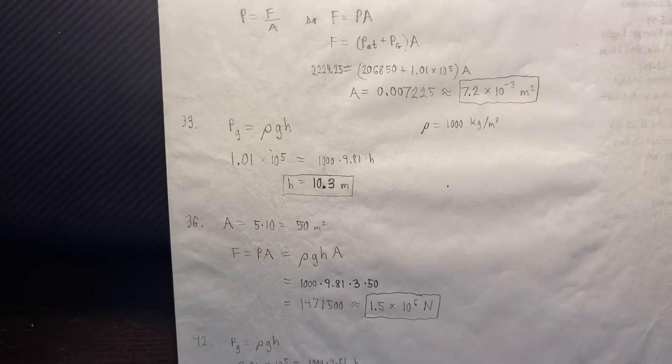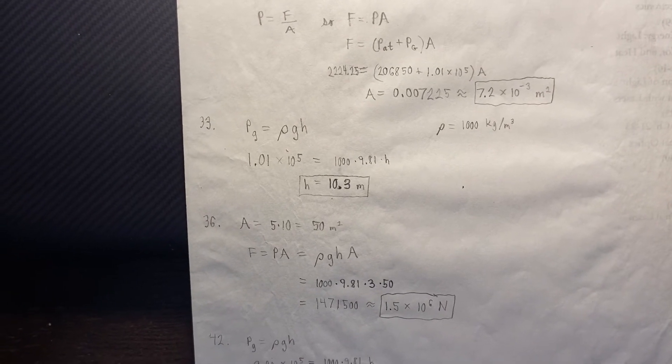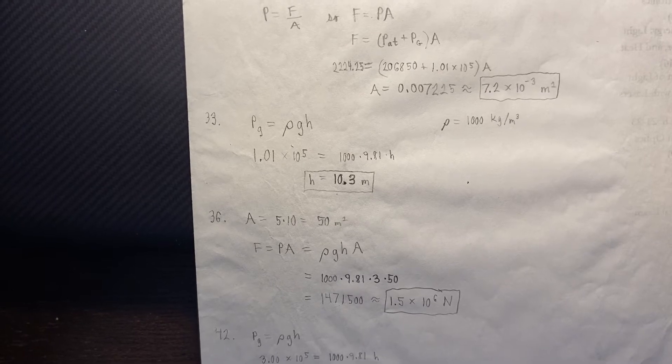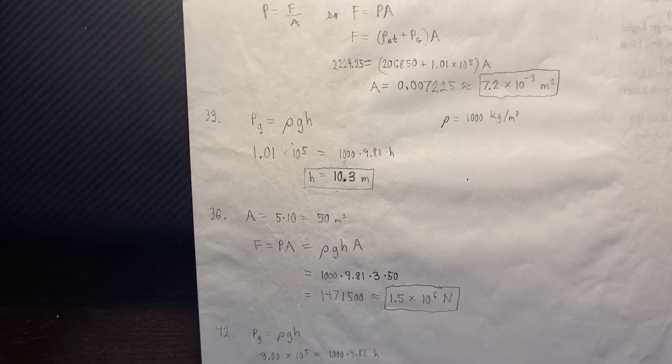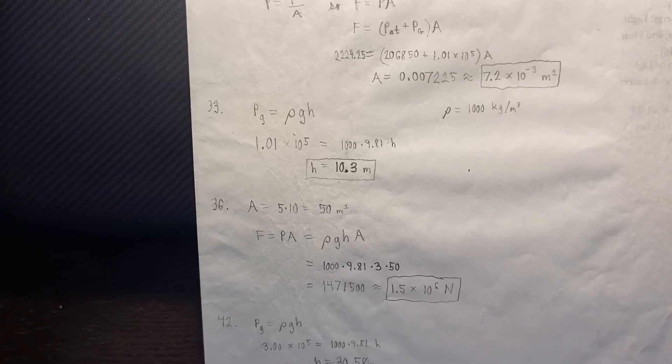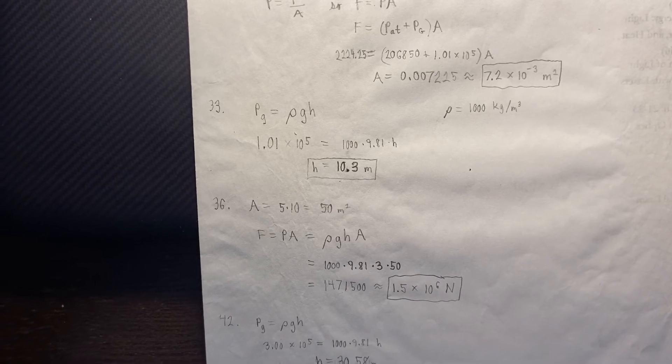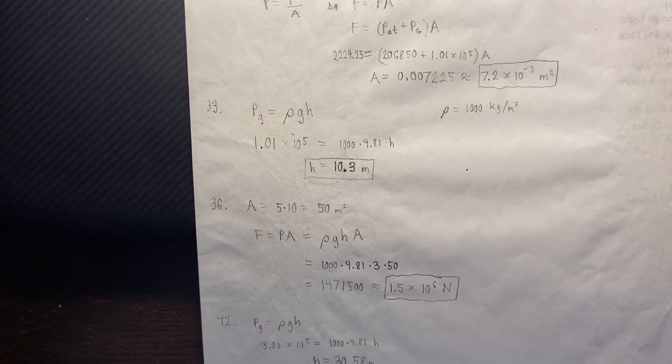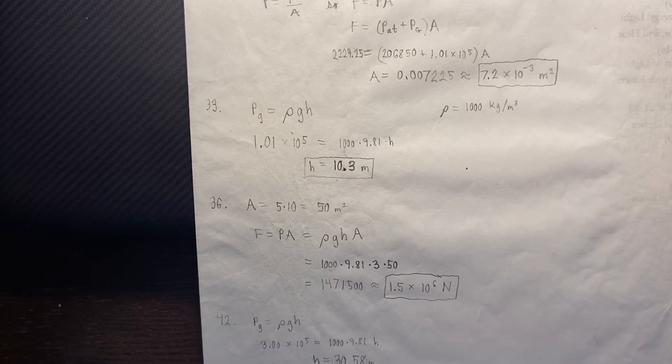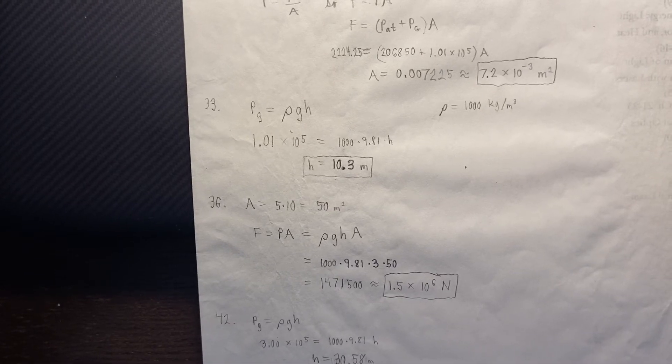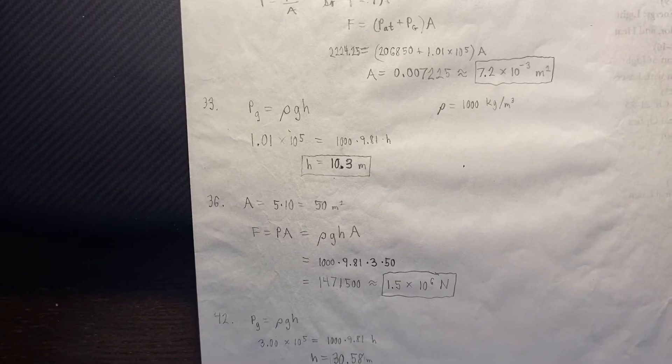Number 36, continuing with our definition of force and area, we know the area is 50 square meters. Now, the pressure here is gauge pressure, so I replace the P with rho GH, and that's rho GH times the area. And then plugging in what we know, we can find that the total force is 1.5 times 10 to the 6th Newtons.